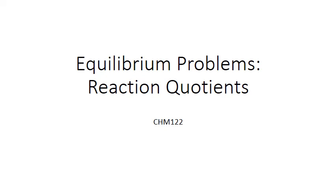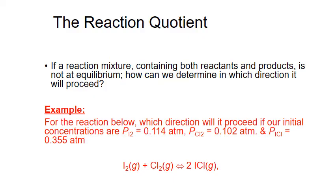In this PowerPoint, we'll review how to use reaction quotients to predict the direction of change a reaction mixture might make to get to equilibrium. A reaction quotient calculation allows us to answer the following question: if a reaction mixture containing both reactants and products is not at equilibrium, then how do we figure out in which direction it will go to get to equilibrium?